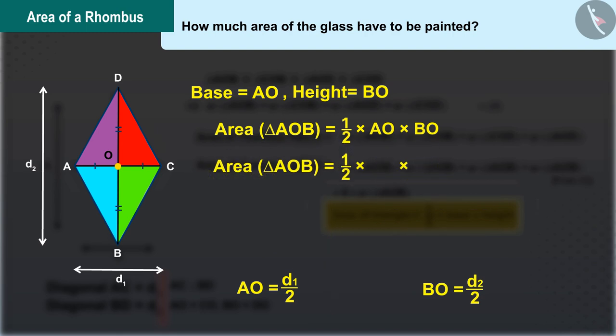Substituting the value of AO and BO into the formula of the area of triangle AOB, the area of triangle AOB is d1 times d2 over 8.